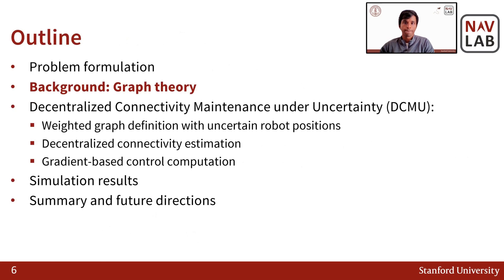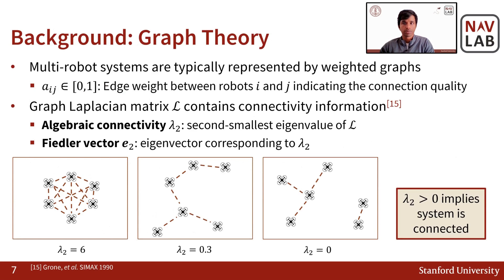Next, let's take a look at some relevant background from graph theory. Multi-robot systems are typically represented by weighted graphs, where the edge weights between robots indicate the connection quality — a value of 1 meaning a strong connection and lower values meaning a weaker connection. These edge weights can be used to construct the graph Laplacian matrix, which contains connectivity information for the system. The second smallest eigenvalue of this matrix is called the algebraic connectivity, and the corresponding eigenvector is known as the Fiedler vector.